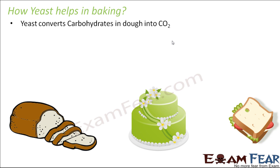Yeast converts the carbohydrates in the dough into carbon dioxide. The dough is made up of flour, and flour has carbohydrates, so these carbohydrates get converted into carbon dioxide. Due to the formation of carbon dioxide, the dough expands and rises, forming bubbles. Carbon dioxide is a gas that leads to the formation of bubbles. When you leave the dough for a long time, you will see it has risen and tiny bubble-like structures have formed due to the carbon dioxide.